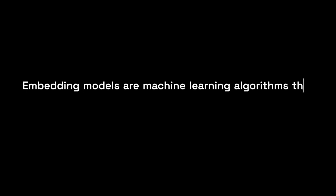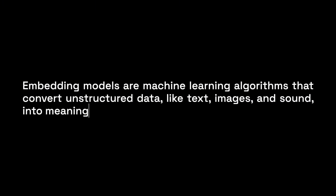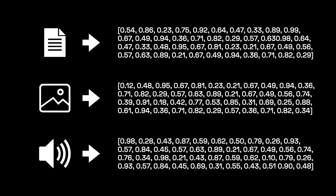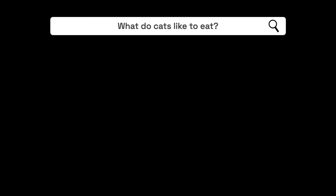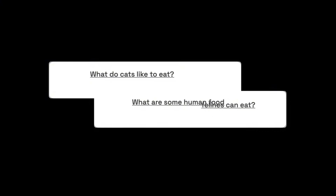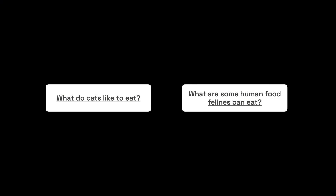Embedding models are machine learning algorithms that convert unstructured data — like text, images, and sound — into meaningful vector representations. They take complex, non-numerical data like text, images, audio, or even user behavior and convert them into vectors that capture their most important features. Unlike simple attributes like mass or temperature, concepts like meaning in text or style in images don't have a straightforward numerical representation. AI embedding models solve this by learning how to map similar items closer together in a vector space. For example, in a text search, instead of just looking for exact keyword matches, an embedding model can place words like 'cat' and 'feline' closer together, even though they're different words. This means that when you search for 'cat,' you might still retrieve documents containing 'feline' because their vectors are mathematically close. This is how AI-powered search engines, recommendation systems, and chatbots find relevant information even when the exact words don't match.